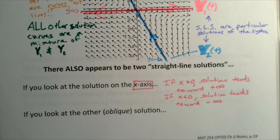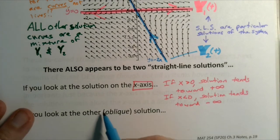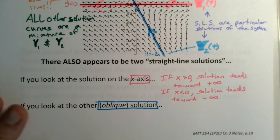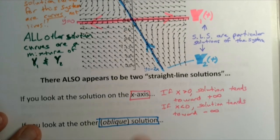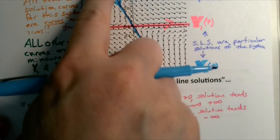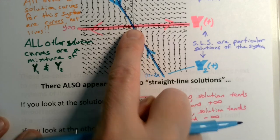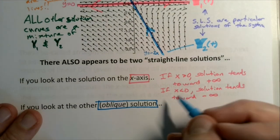And then the other one, this one, I'll just call it the oblique solution - that's the one that we shaded in blue up there. That oblique solution, well, all the initial conditions on that line, no matter where you start, all roads lead directly to the origin. So it doesn't matter what your initial conditions are. All initial conditions on that line head toward the origin as t approaches infinity.